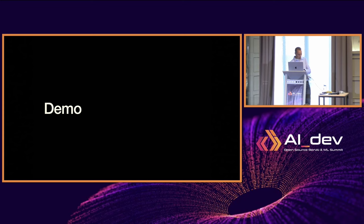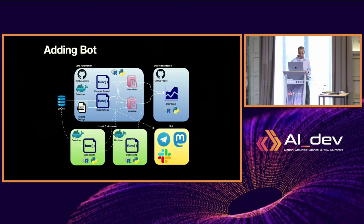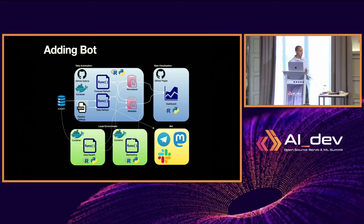We're getting short on time, so I'll skip the demo, but I'm happy to show how the code runs after. Beyond GitHub Pages, you can also create bots for Slack, Telegram, or social media — for example, extracting information from stocks and creating charts to post automatically.